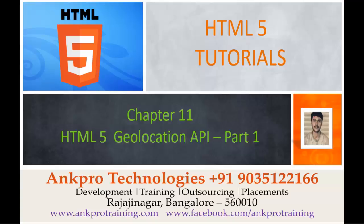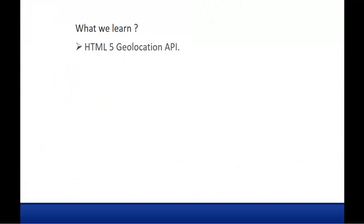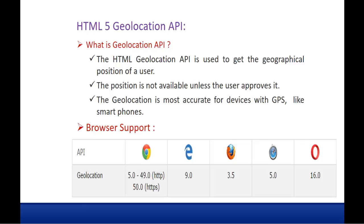Welcome to HTML5 tutorials, chapter 11: HTML5 Geolocation API part 1, brought to you by AngPro Technologies. My name is Arish. In this session we are going to learn about the HTML5 Geolocation API. The HTML Geolocation API is used to get the geographical position of a user. If I wish to get the current position of a user, I can achieve that with the help of this API.